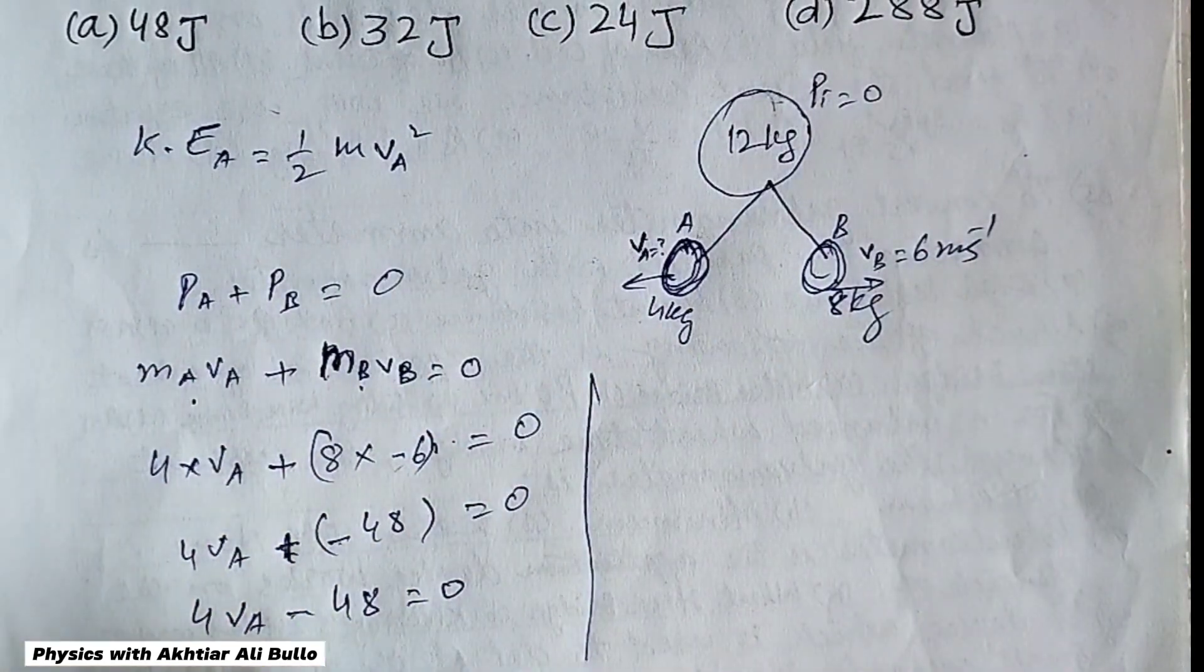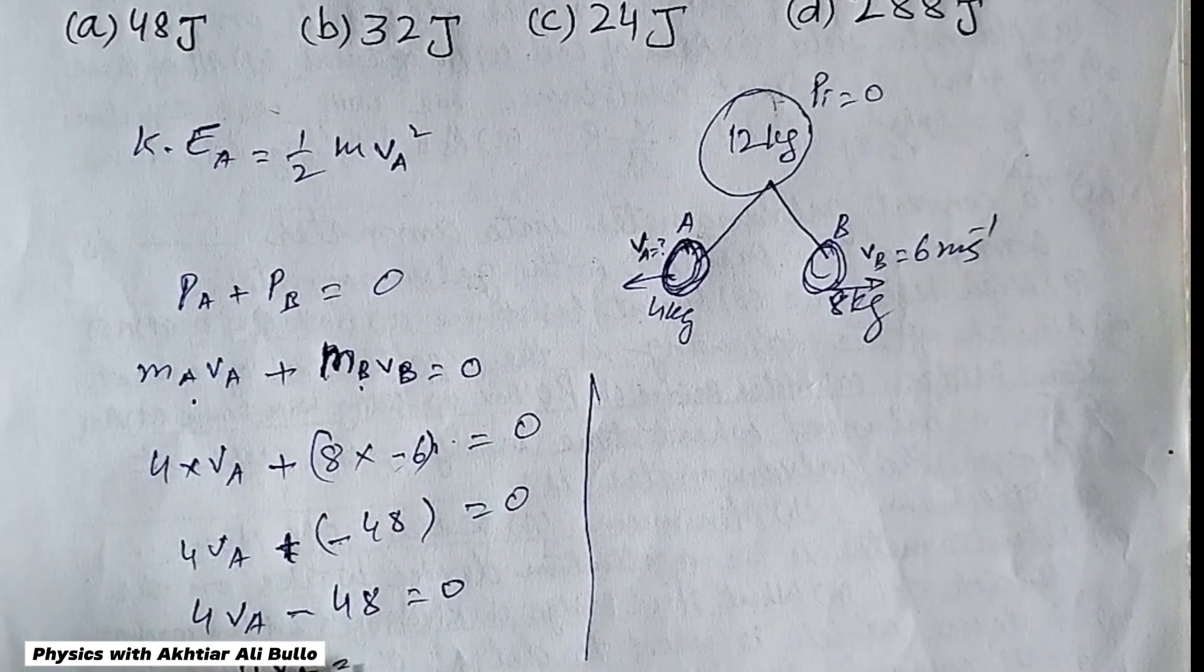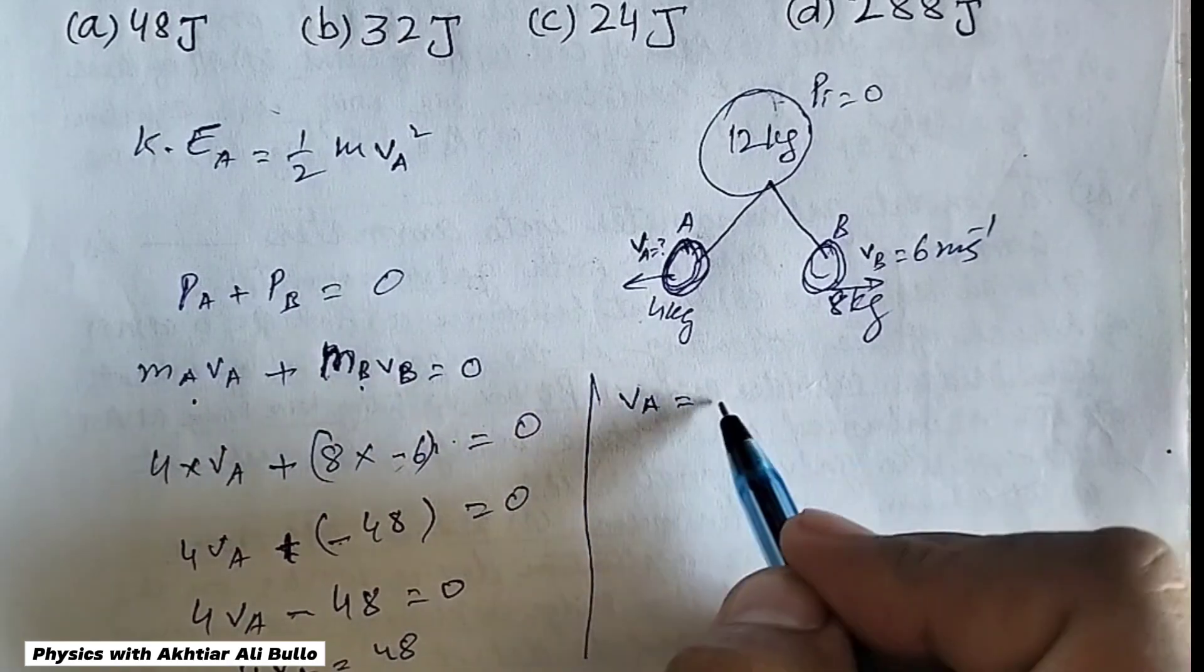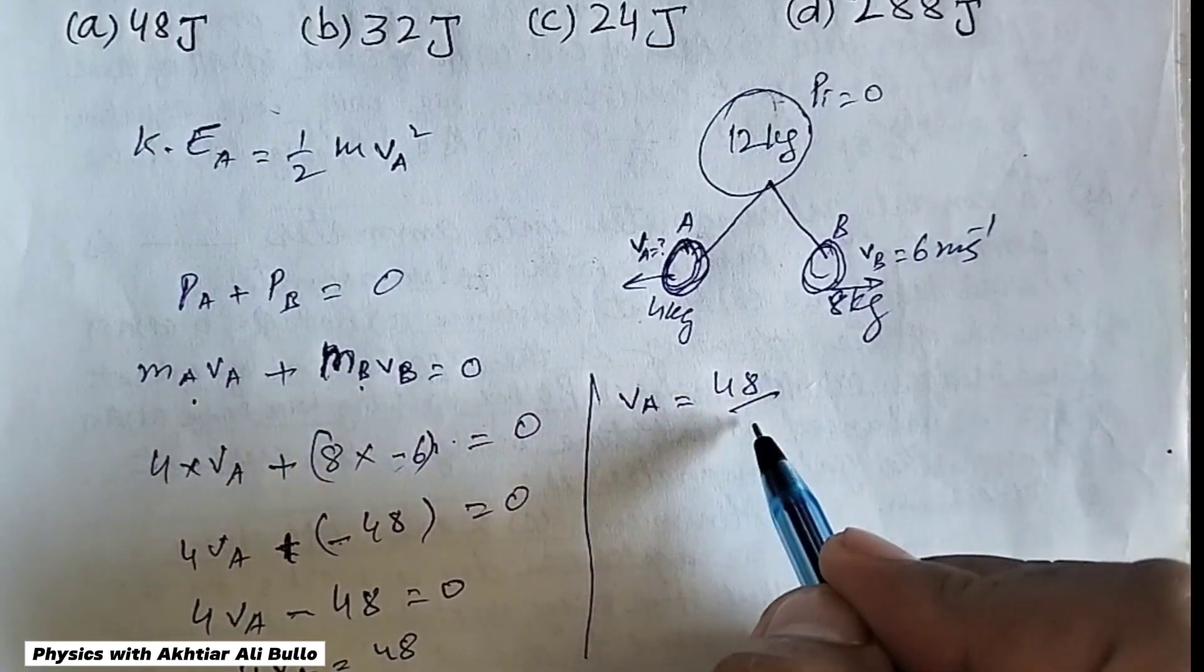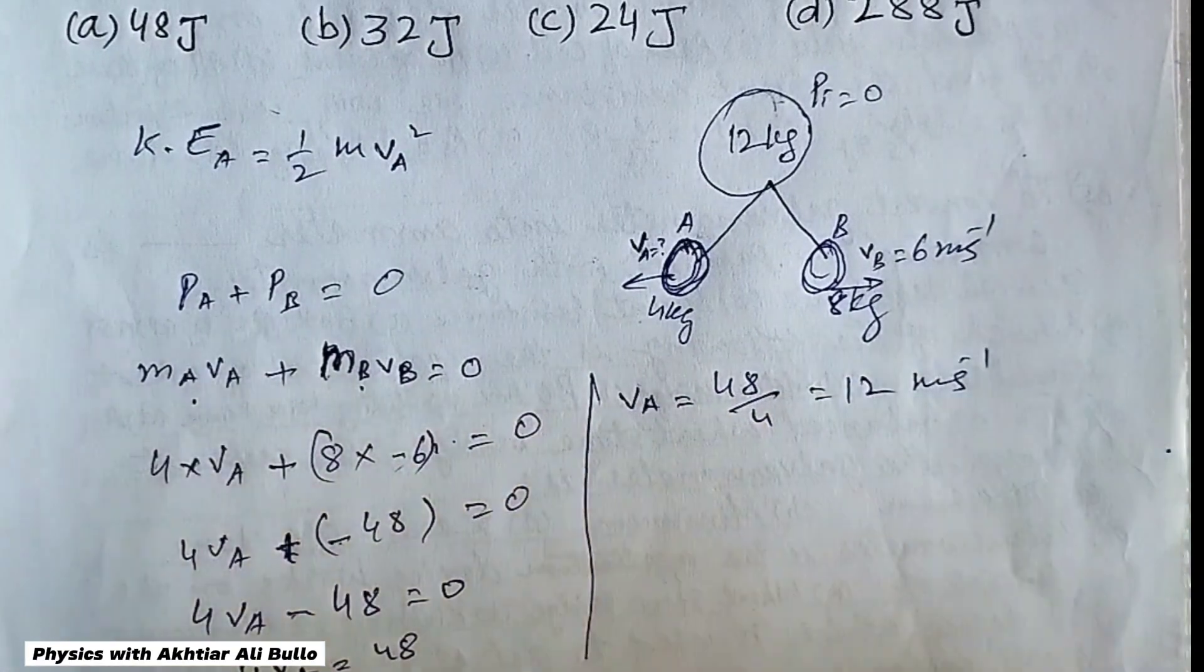So 4 into vₐ will be equal to 48, so velocity of A will be equal to 48 upon 4, it will be 12 meter per second.